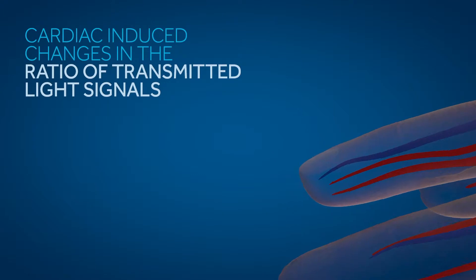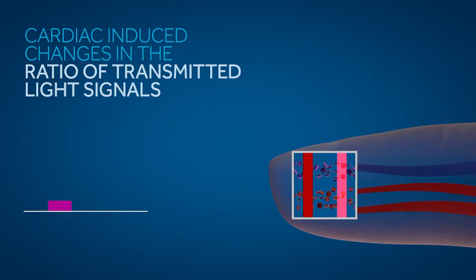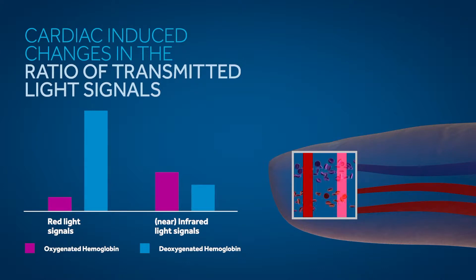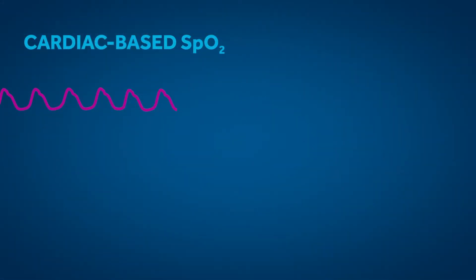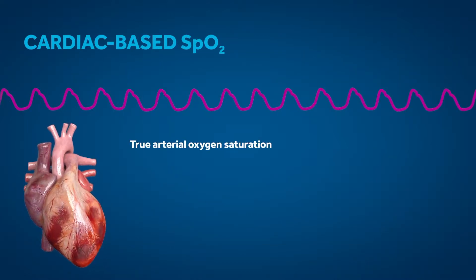Pulse oximetry is based on a predictable relationship between a patient's arterial blood oxygen saturation and cardiac induced changes in the ratio of transmitted red and infrared light signals. The methods for determining NELCOR pulse oximetry SPO2 values are founded on the fact that the patient's true arterial oxygen saturation is associated with the patient's cardiac induced pulse.